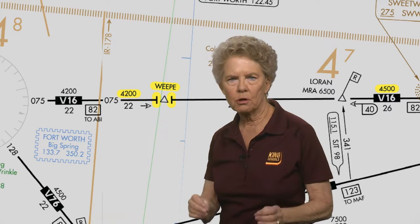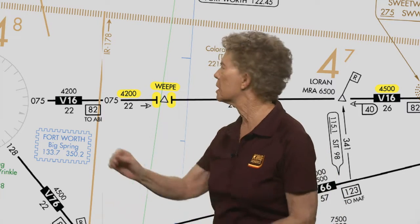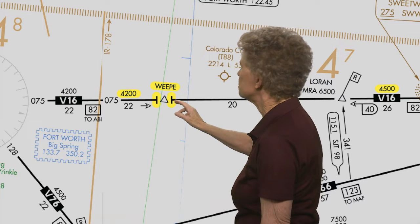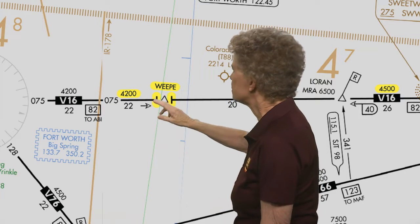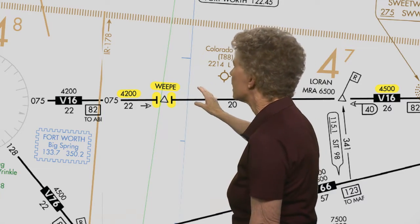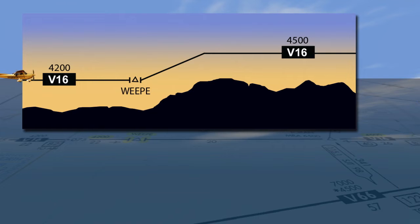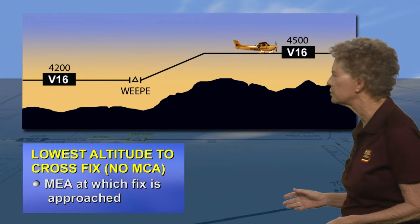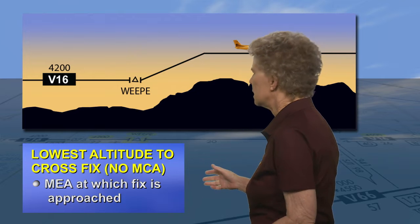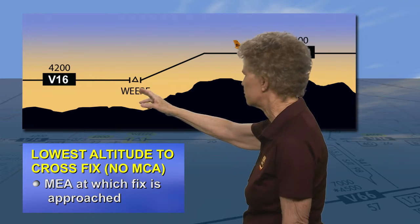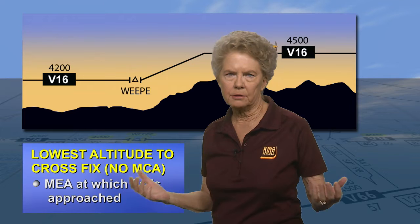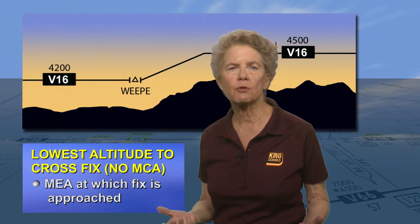At Weep, there is no minimum crossing altitude, so you're level at 4,200 feet eastbound. As soon as you pass Weep, you start your climb to the new higher minimum en route altitude of 4,500 feet. The lowest altitude for crossing a fix beyond which the airway has a higher minimum altitude is the minimum en route altitude at which you approach the fix, providing no minimum crossing altitude is specified.